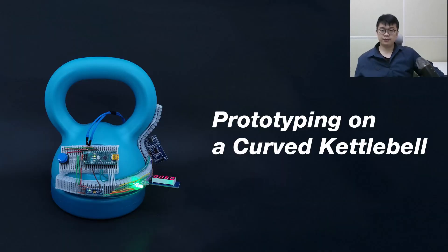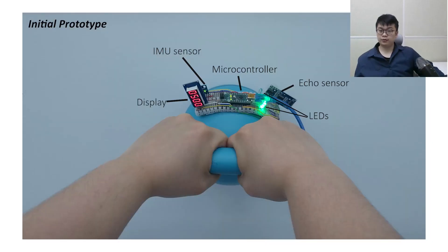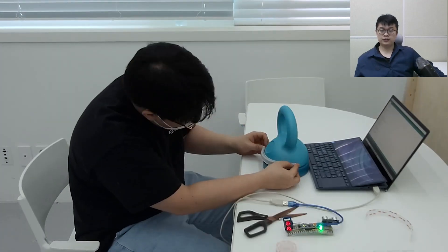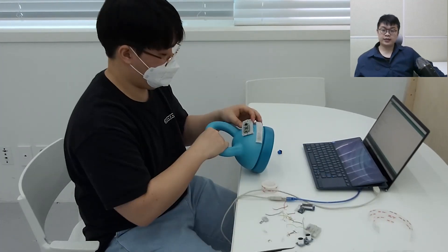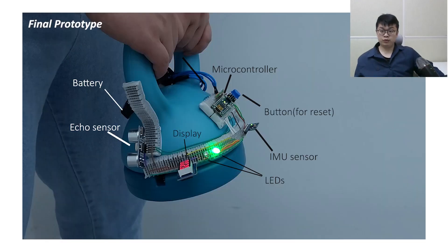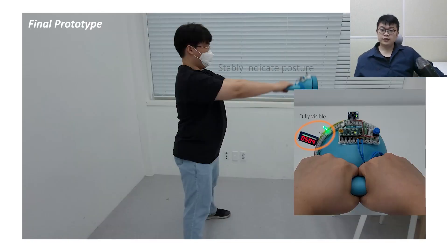The final example is prototyping on a curved kettlebell. This is an initial prototype that senses users' posture and count repetition while working out. We found that the sensing was not stable and displays were not fully visible. To find the proper positions for the components, we added additional FlexBoard to the surface. This enabled us to explore the optimal position of the components. Now, as you can see, this time, the prototype is functioning well.